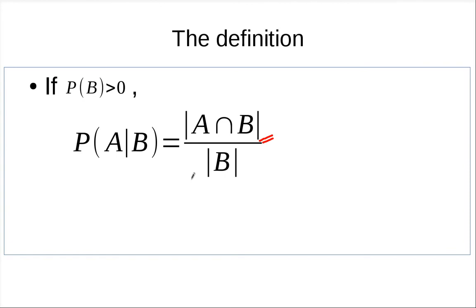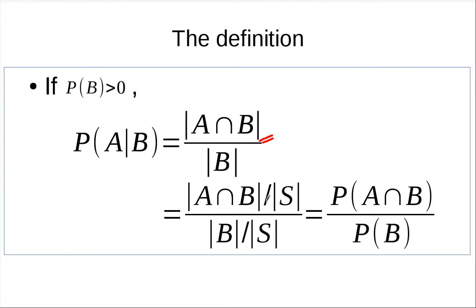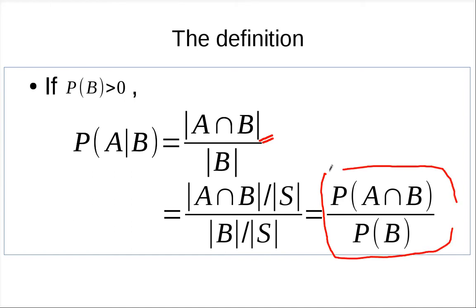If we do some algebra, we can divide both numerator and denominator by the size of the sample space. This gives us the formula: P(A|B) = P(A∩B) / P(B). This is one of the most important concepts and formulas in probability theory.